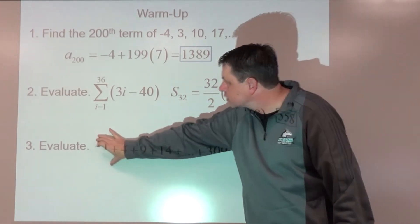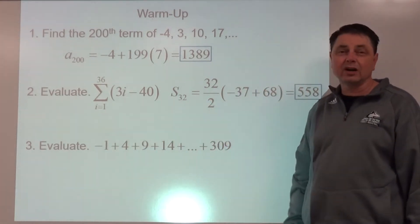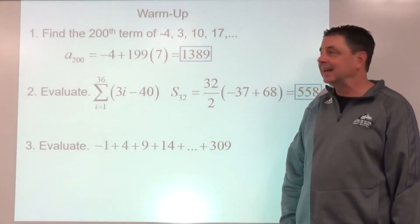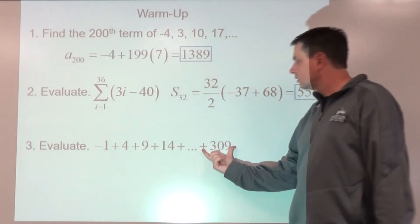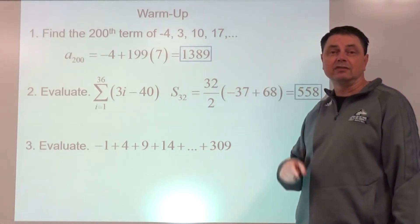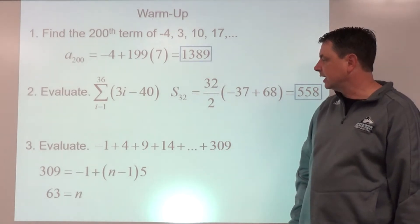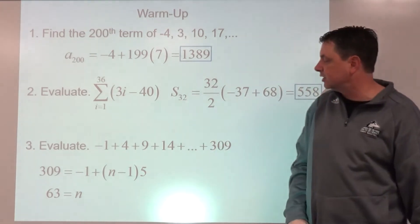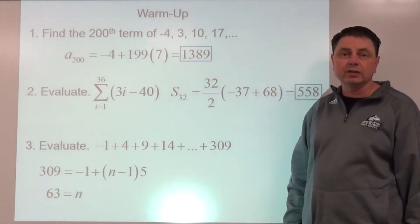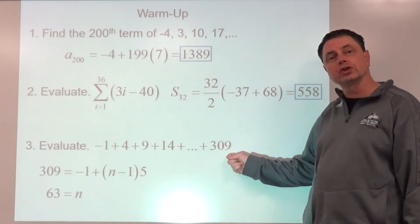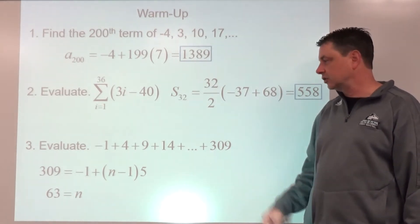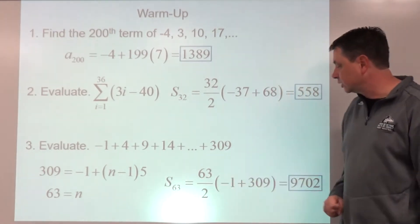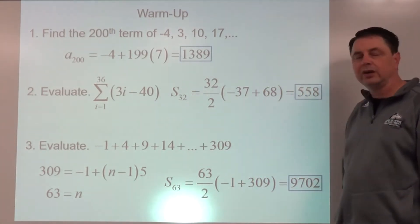Number three: you're going up by five from term to term, so you know it's arithmetic, but we don't know how many terms there are. To find n, we use a-sub-n: 309 equals the first term plus n minus 1 times the common difference. Solving gives n equals 63. So s-sub-63 equals 63 divided by 2 times the first plus last term, giving a sum of 9702.